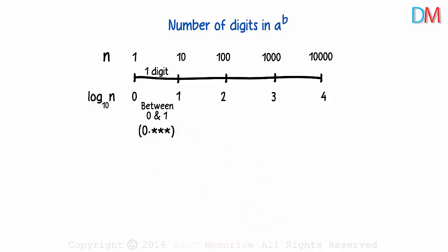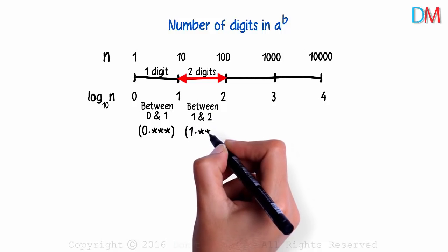Now look at the second part. Any number between 10 and 100 will have 2 digits, correct? Numbers like 22, 49.1 have 2 digits. And their logarithm lies between 1 and 2. It'll be of the form 1 point something.